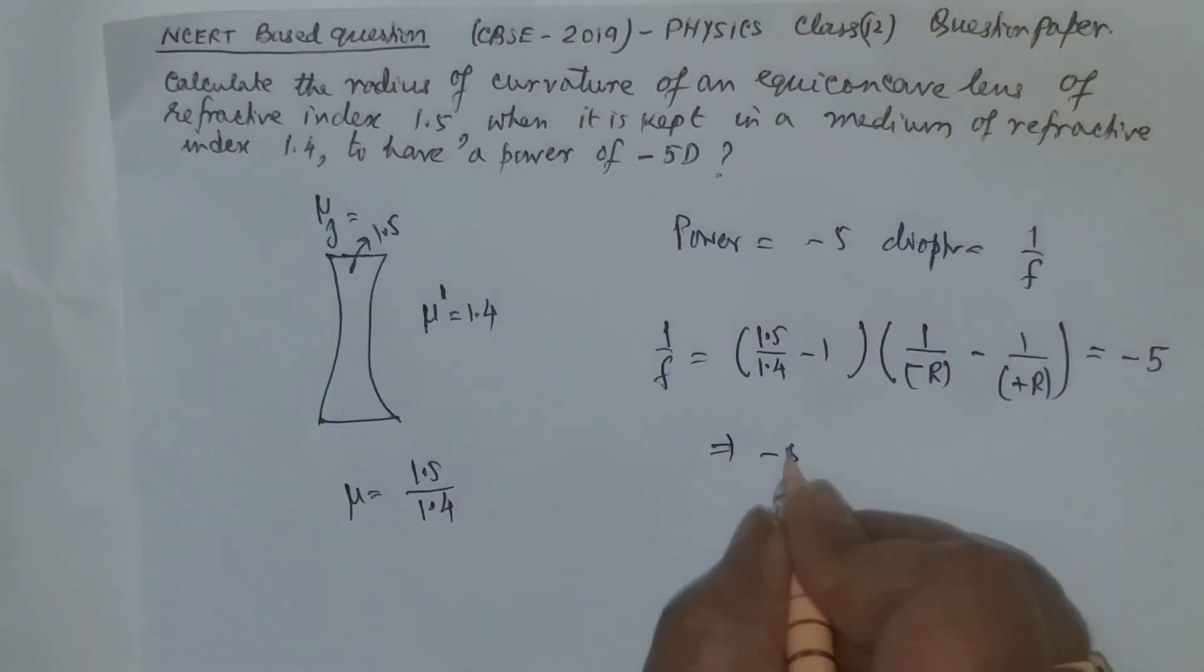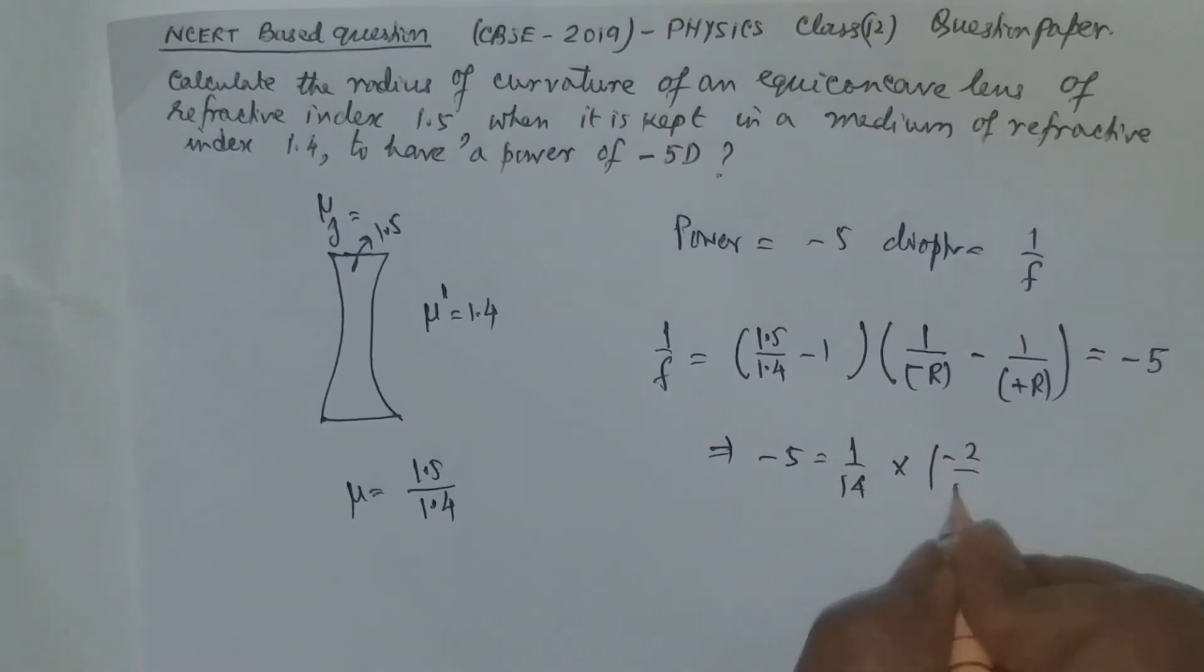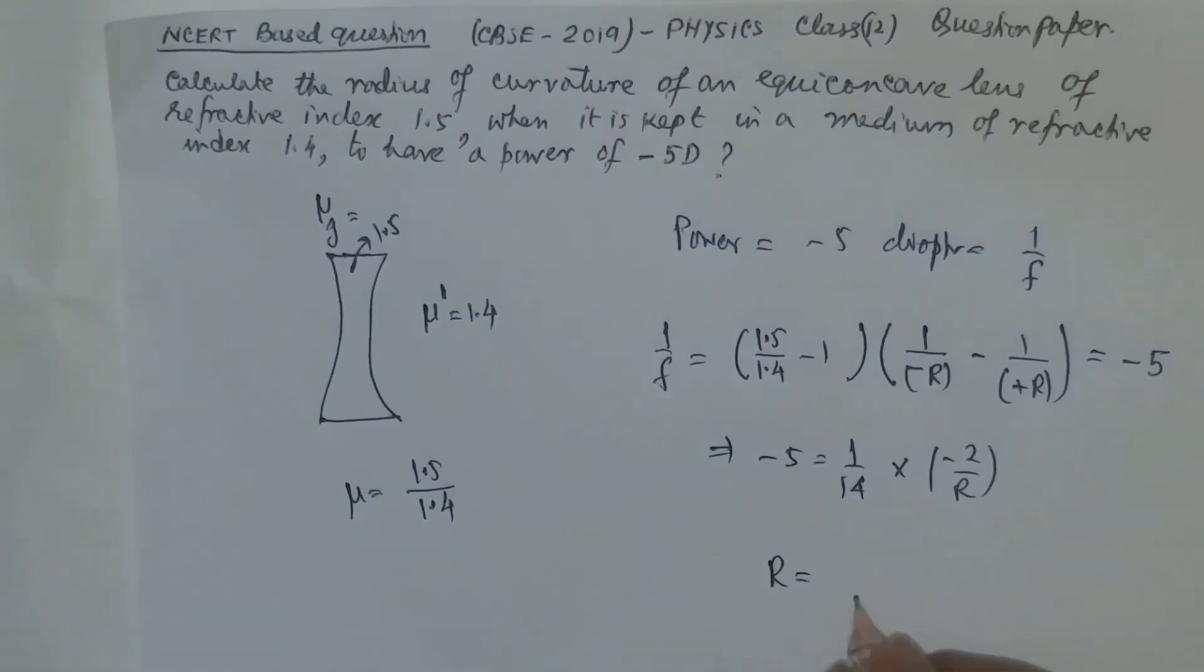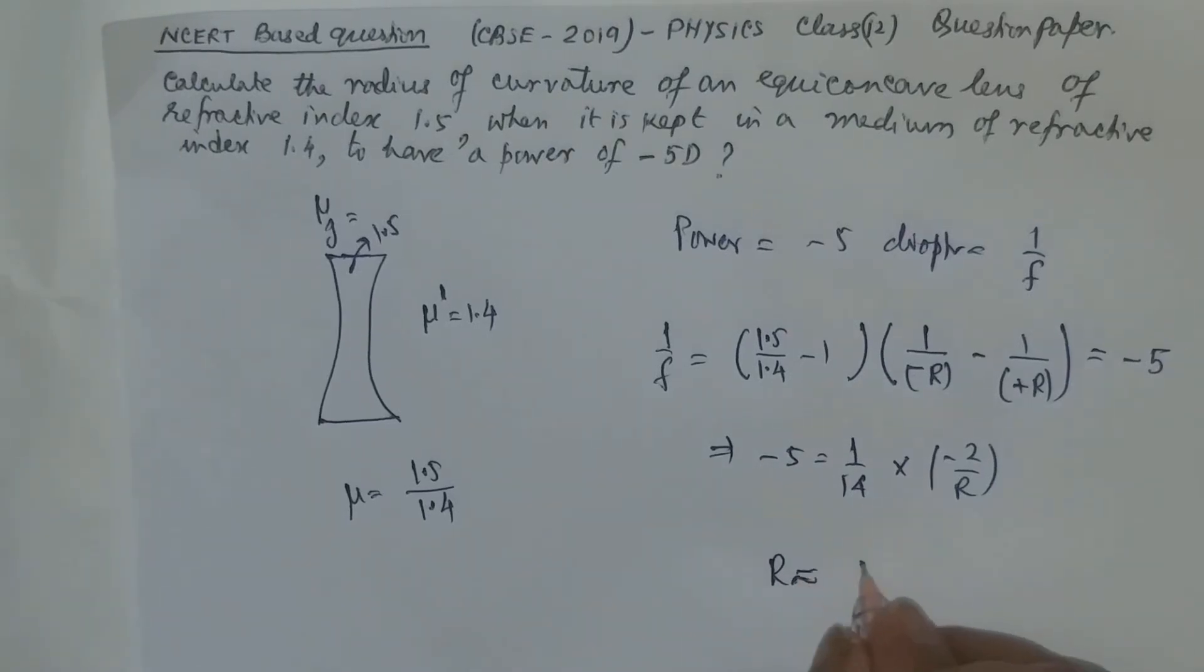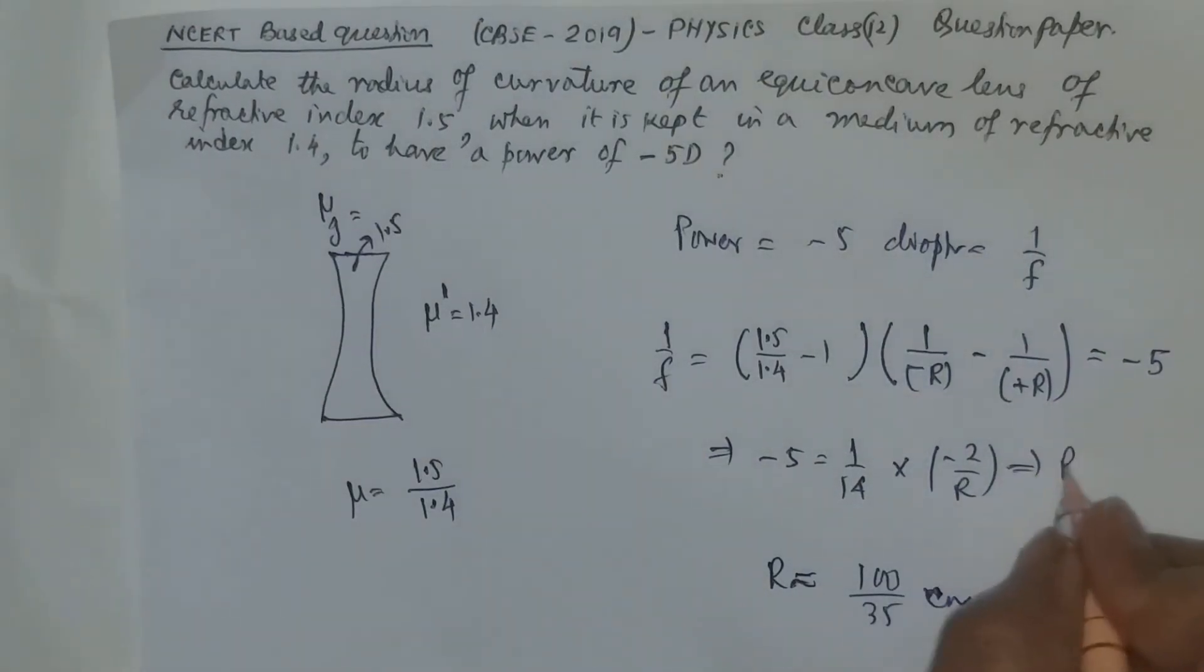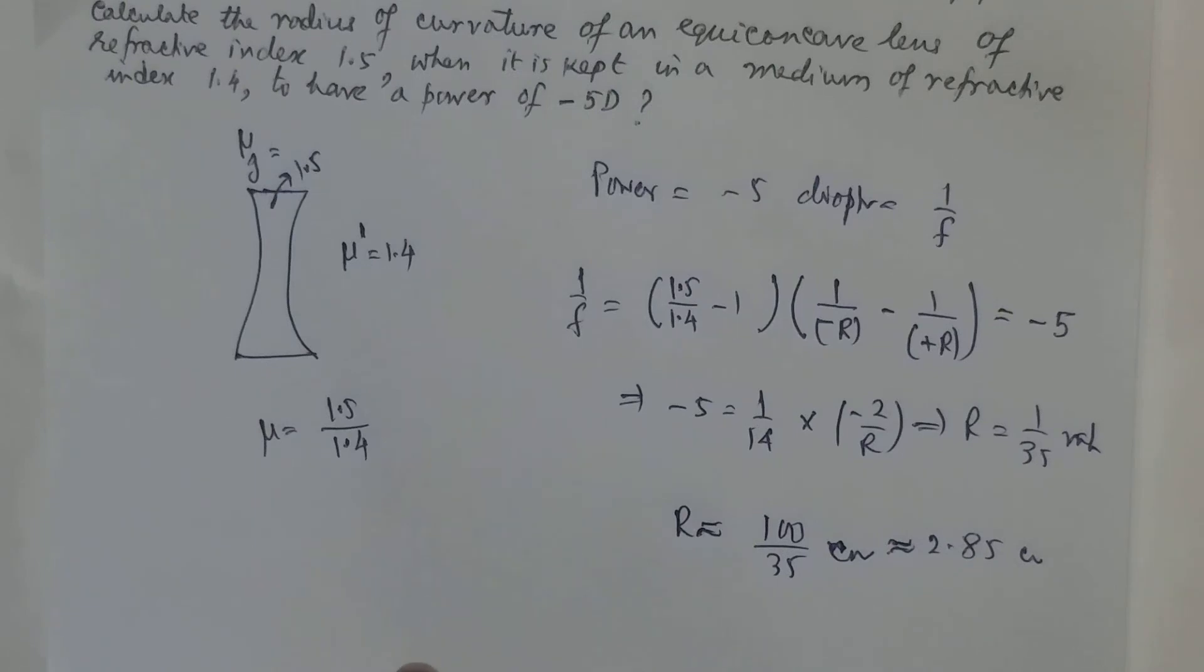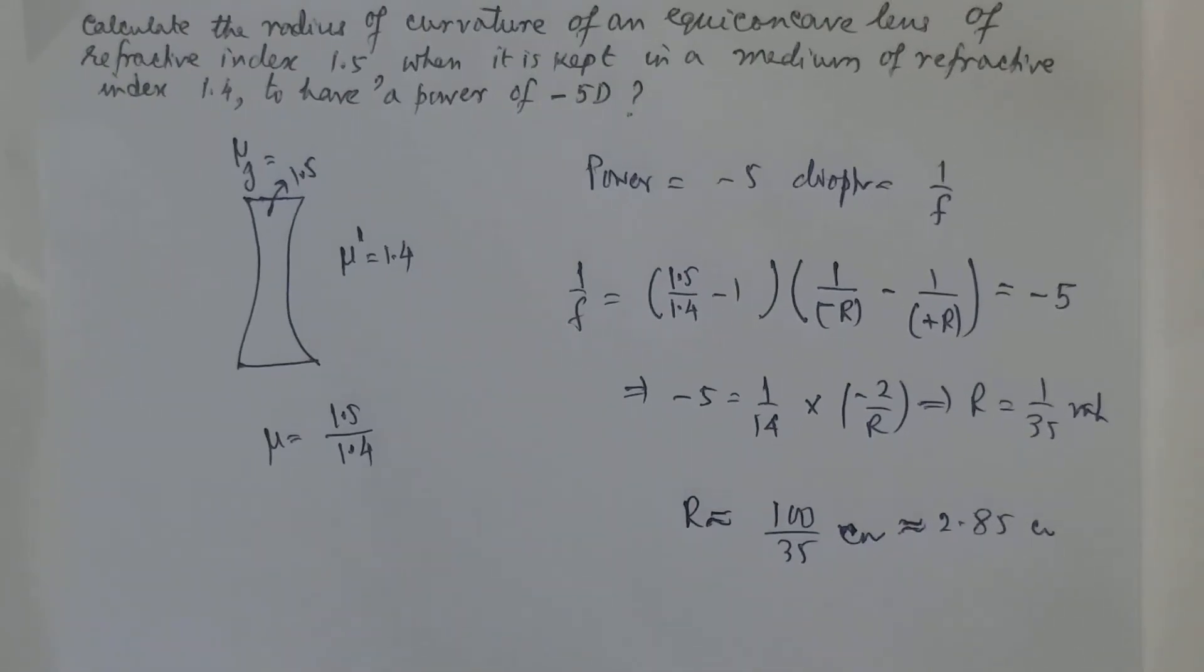So let us proceed: minus 5 is equal to 1 by 14 into (minus 2 by R). Solving, we get R is equal to 100 by 35 centimeters. I am taking centimeters because it will be R equal to 1 by 35 meters. So it is around 2.85 centimeters. This will be the radius of curvature of this double concave lens.